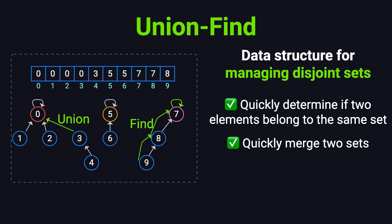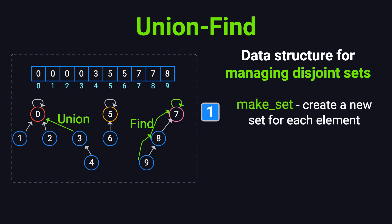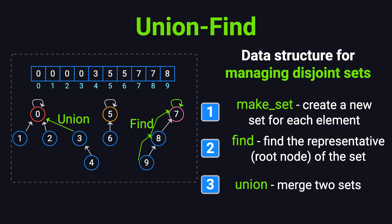The Union-Find structure mainly supports three fundamental operations. The first operation, MakeSet, creates a separate group for each element, initially treating each element as its own parent. The second operation, Find, locates the representative, or simply the root of the group that a given element belongs to. This root serves as the identity of the group. The third operation, Union, merges two distinct groups into one, provided they are not already part of the same group.